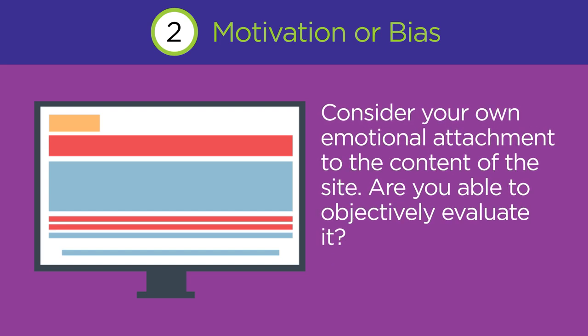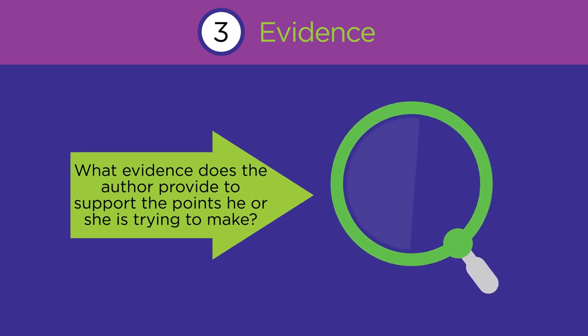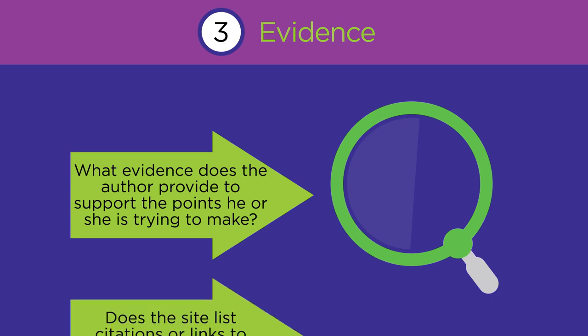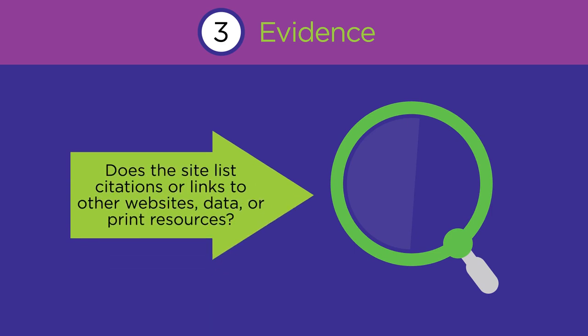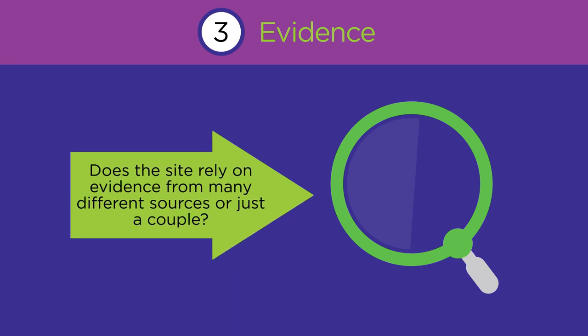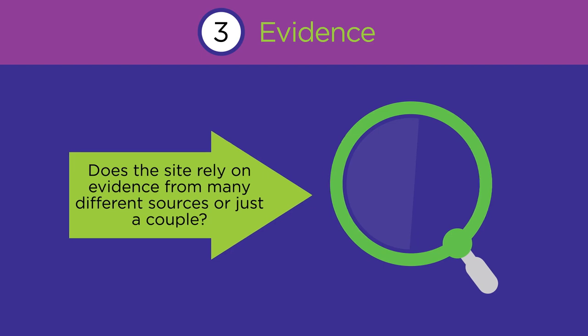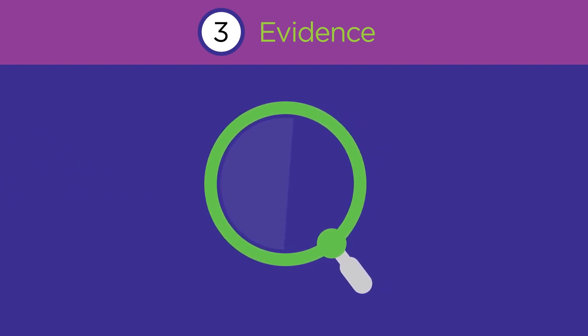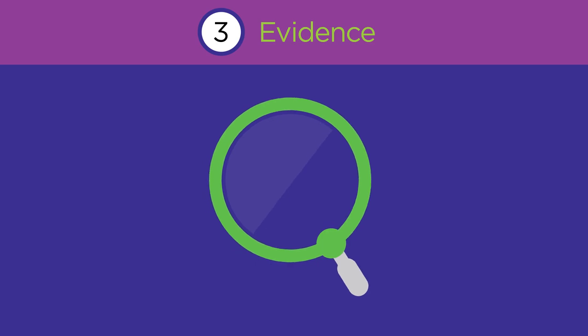Also, consider your own emotional attachment to the content of the site. Are you able to objectively evaluate it? Next, ask yourself what evidence does the author provide to support the points he or she is trying to make? Does the site list citations or links to other websites, data, or print resources? Do links actually work? Can you verify evidence used in the site? Does the site rely on evidence from many different sources or just a couple? The more verifiable evidence that a website uses, the more likely it is that the information is trustworthy.